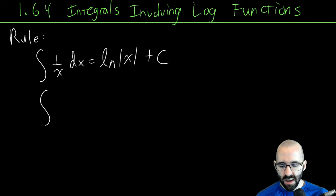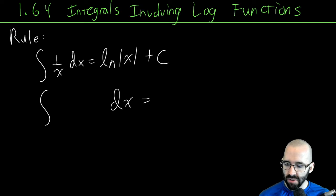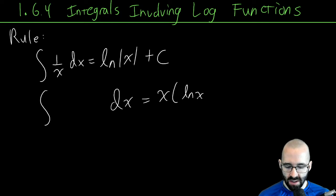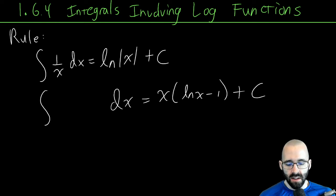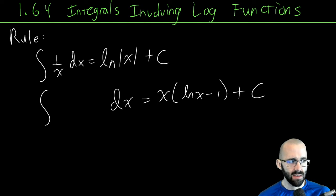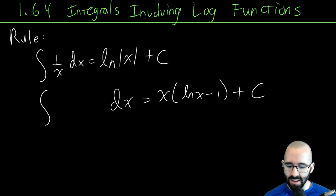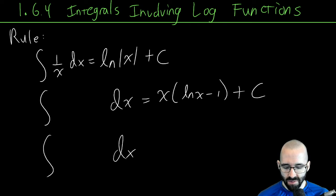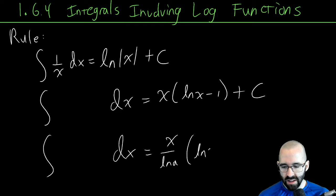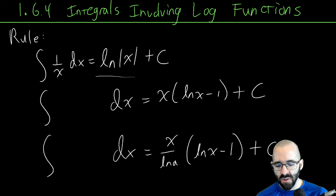The second rule — which I'll leave blank for you to verify — is that the anti-derivative of ln(x) is x·ln(x) − x + C. The third rule is that the anti-derivative of log base a of x is x divided by ln(a) times (ln(x) − 1) + C. Remember these are just formulas for anti-derivatives.